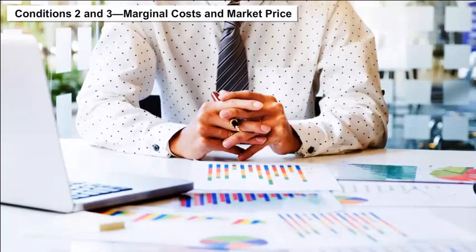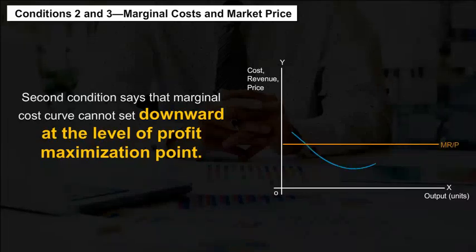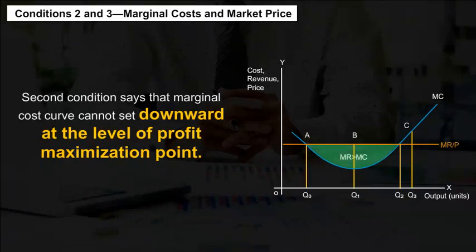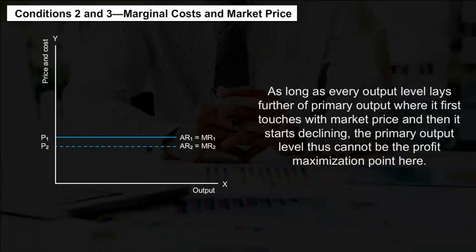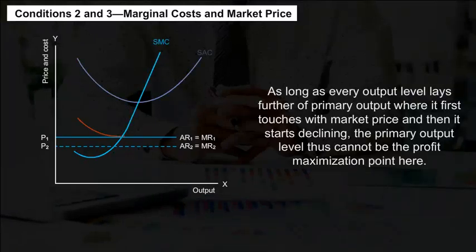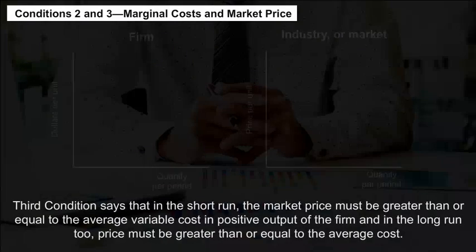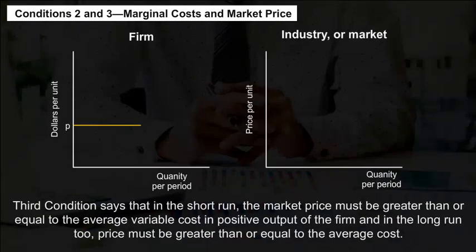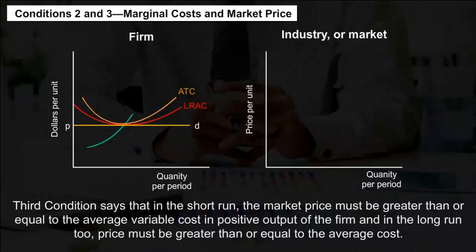Conditions 2 and 3 — Marginal Costs and Market Price. Second, the marginal cost curve cannot slope downward at the level of the profit maximization point. As long as every output level lies further of the primary output where it first touches the market price and then starts declining, the primary output level cannot be the profit maximization point. Third, in the short run, market price must be greater than or equal to the average variable cost at positive output of the firm.